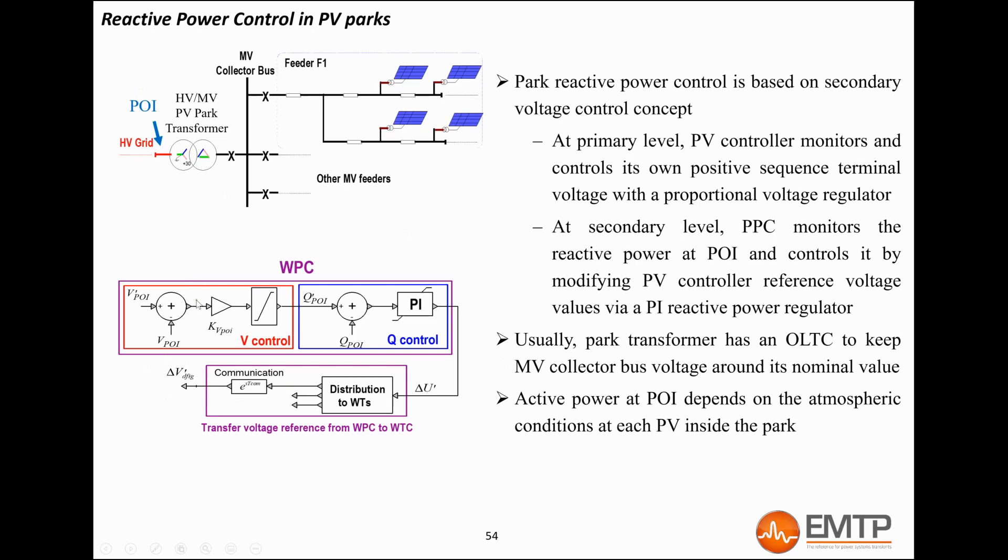In the case of the EMTP 4.1 generic model, only the park reactive power control loop of the PPC is modeled. To control the reactive power, the PPC sends a voltage deviation reference to all the PV controllers.